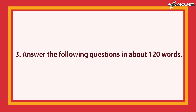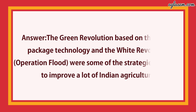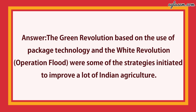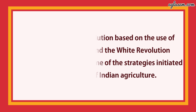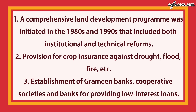Question number 3: answer the following questions in about 120 words. Question one: suggest the initiatives taken by the government to ensure the increase in agriculture production. Answer: the Green Revolution based on the use of package technology, and the White Revolution, i.e. Operation Flood, were some of the strategies initiated to improve Indian agriculture. A comprehensive land development program was initiated in the 1980s and 1990s that included both institutional and technical reforms. Provision for crop insurance against drought, flood, fire, etc., and establishment of grameen banks, cooperative societies, and banks for providing low-interest loans.